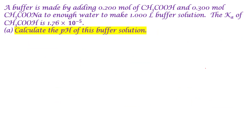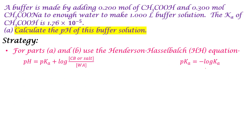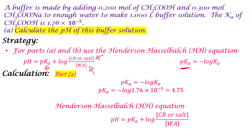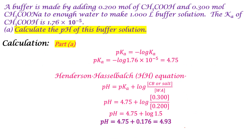So we're going to start with Part A: calculate the pH of this buffer solution. We're going to use the Henderson-Hasselbalch equation. The strategy is to figure out our pKa first, then plug it into the equation. The Henderson-Hasselbalch equation is: pH equals pKa plus log of conjugate base concentration over weak acid concentration. We already know the Ka value, which we can convert into pKa. So we substitute Ka into the equation and take the negative log of that number, which comes out to be 4.75.